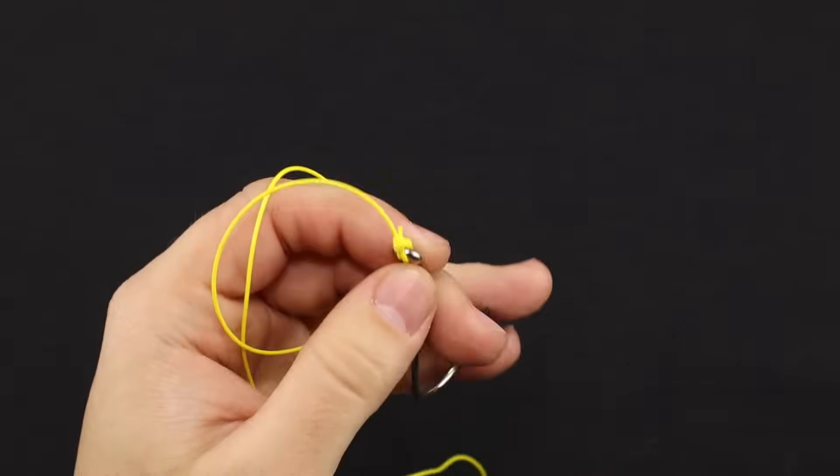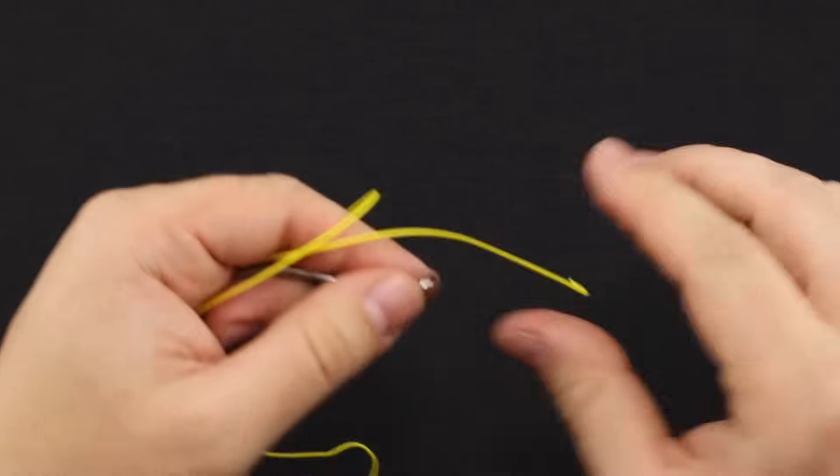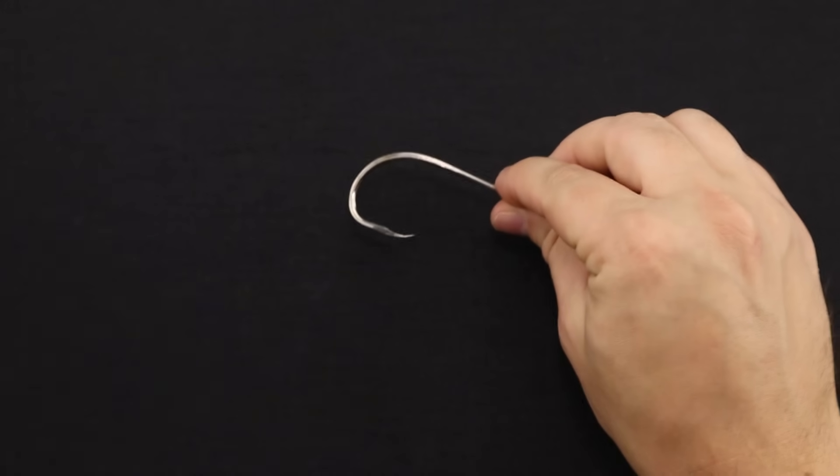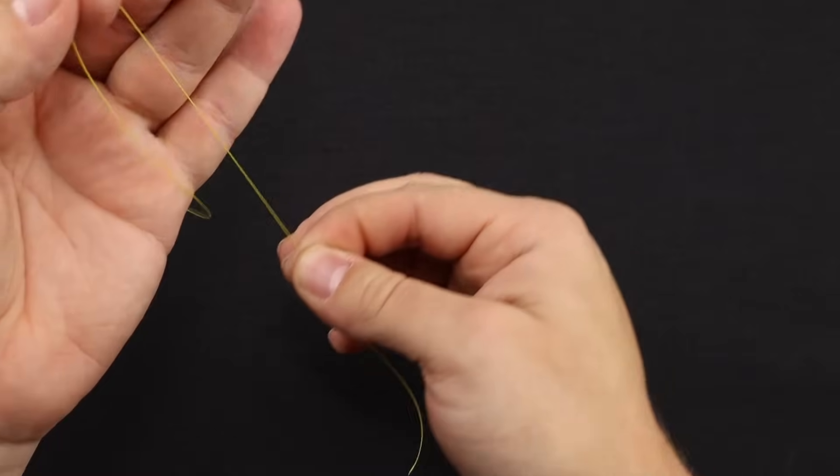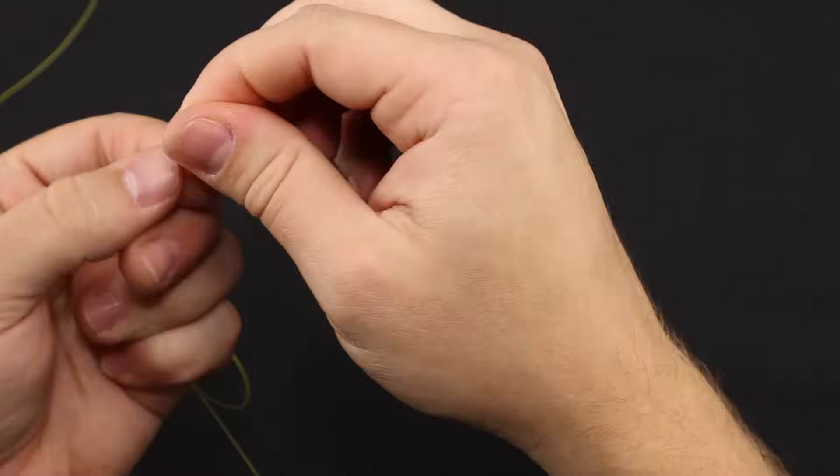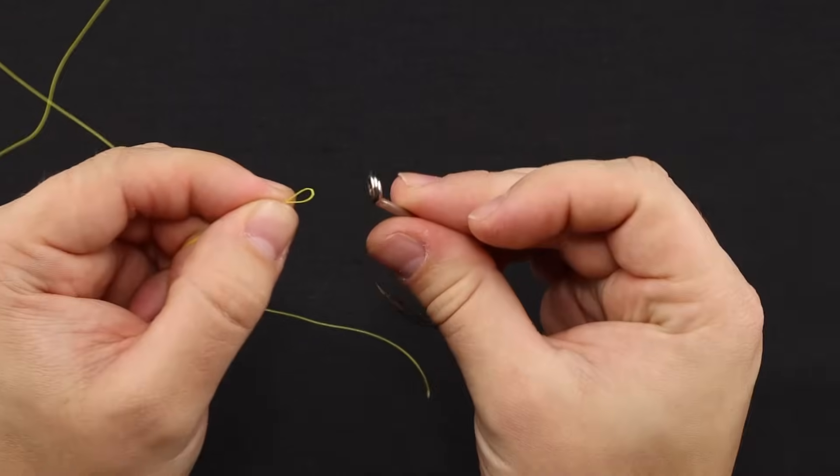I'll go ahead and demonstrate with the braided line real quick here. So with your braided line, you're going to be doing the same exact process. Go ahead and double that over, get your loop nice and tight, and pass that through the eye of your hook.